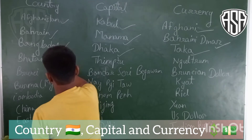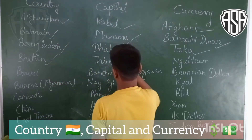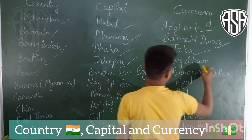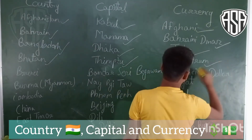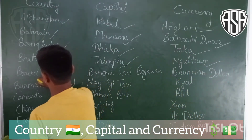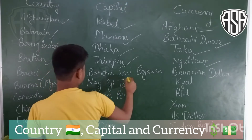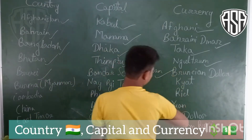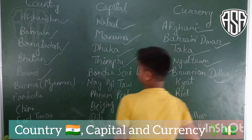Bhutan. Bhutan is Country. And Capital Khenpo. And Currency Trump. Brunoy. Brunoy Capital Manama. And Currency Brunoy Dollar.